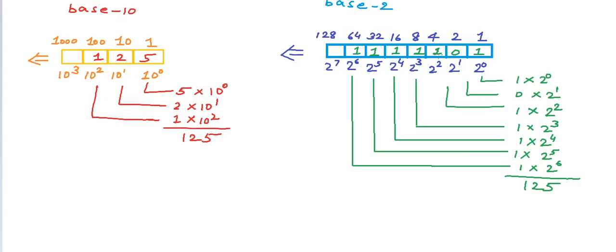So 1111101 in binary is actually the number 125 in decimal number system. We say that this number 1111101 in base 2 is actually 125 in base 10.